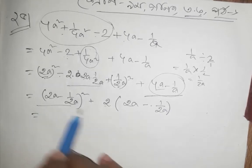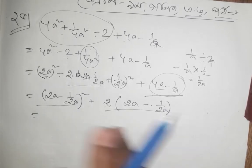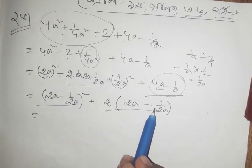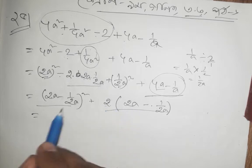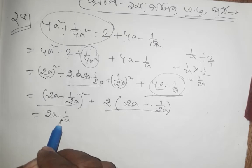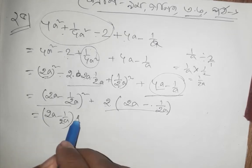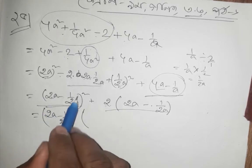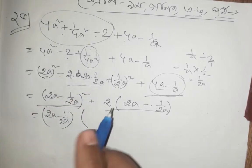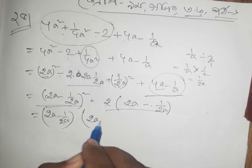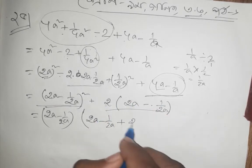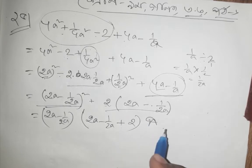We will see 2a minus 1 by a, and here we have 2a minus 1 by a. For 2a minus 1 by 2a, we will see that 2a is common. So 2a minus 1 by 2a, plus it is a common factor.